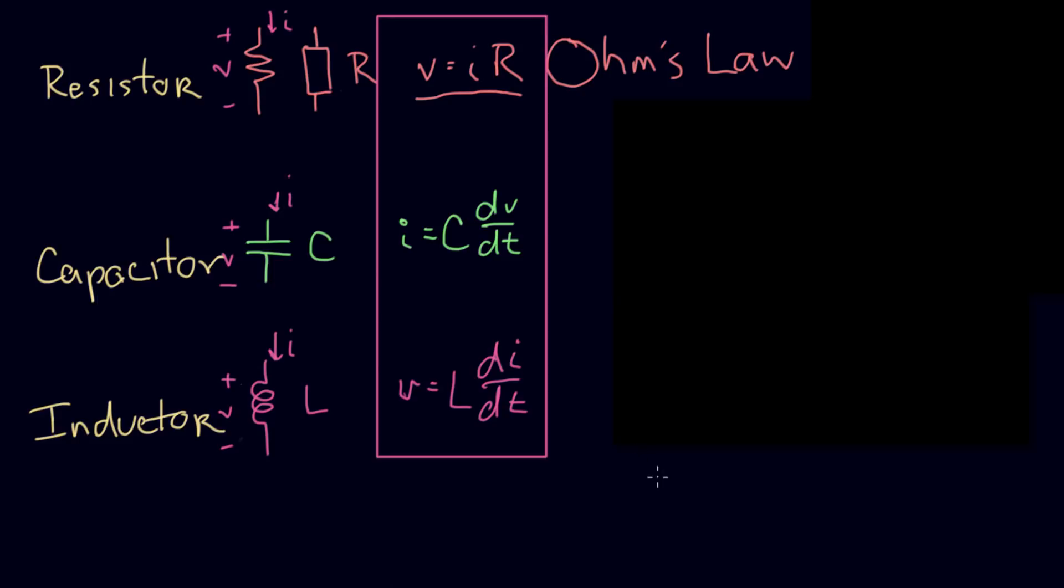One final point I want to make is, for both these equations of components, these are ideal. Ideal components. That means these things are mathematical perfect things that we have in our minds that we're going to try to build in the real world. And we'll come close. We'll come very close.